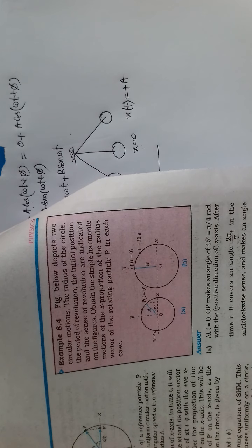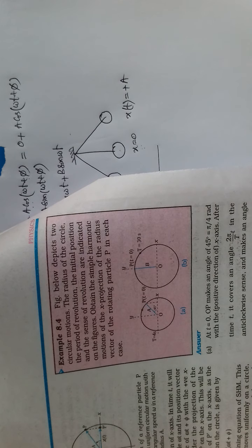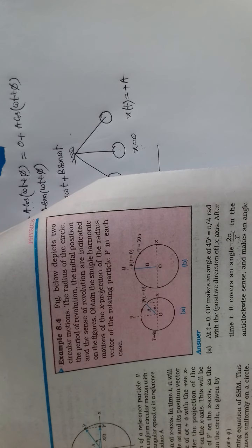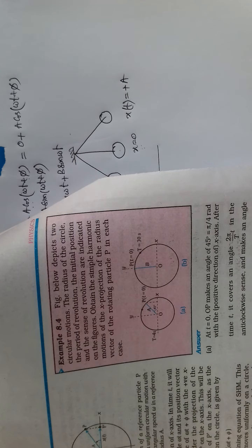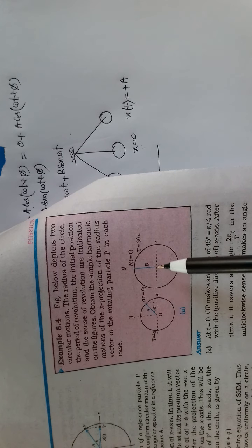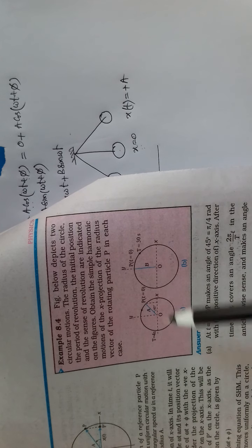Now let us look at example 8.4. The figure depicts two circular motions. The radius of the circle, the period of revolution, the initial position, and the sense of revolution are indicated in the figures. We need to obtain the simple harmonic motions of the x-projection of the radius vector of the rotating particle P in each case — case A and case B. We have to write the equation for the displacement of the projection point.